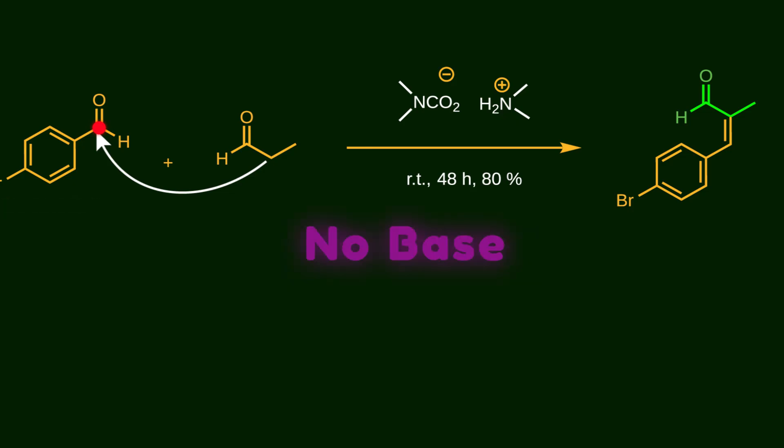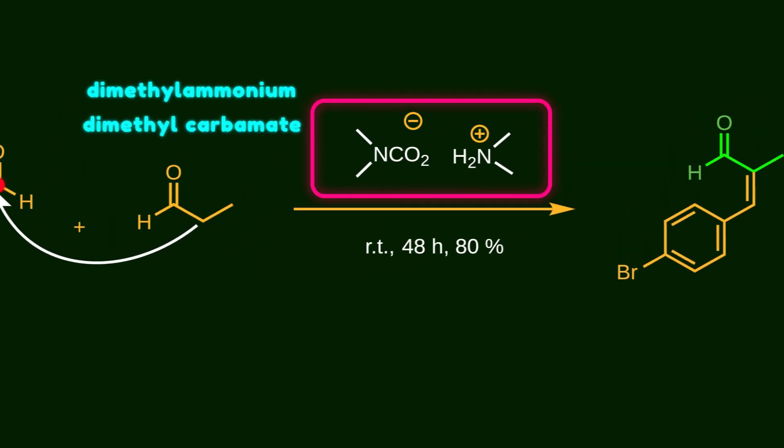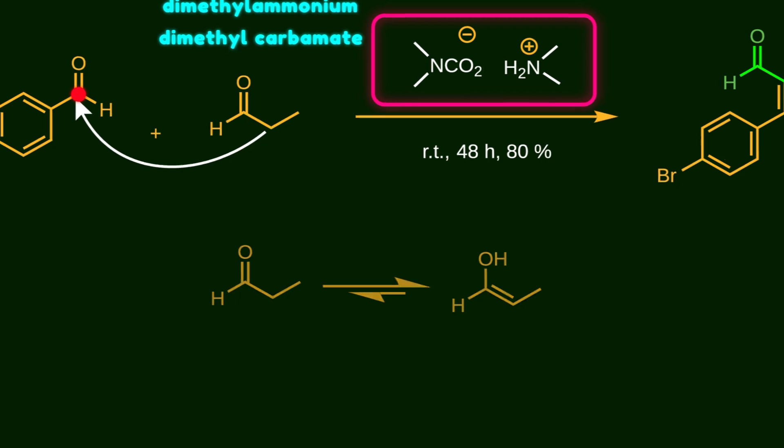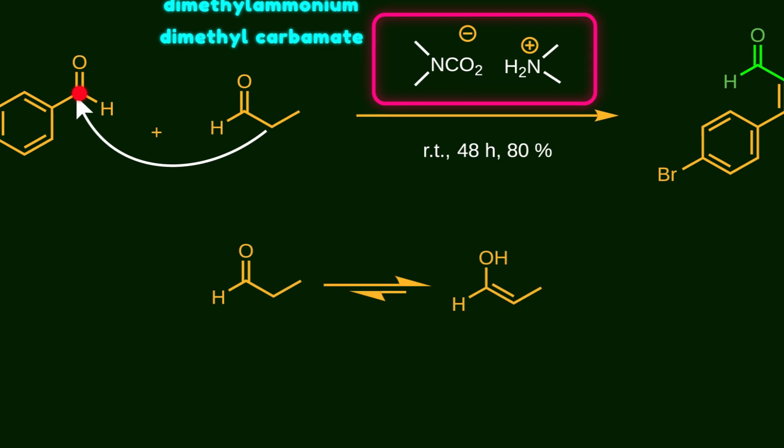Did you notice that there is no base used in this reaction? The reason is that the solvent is very polar. That means the enolizable aldehyde tends to exist more in the enol form rather than the ketone. So its nucleophilicity is high enough to attack the other aldehyde even without any base.